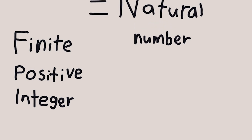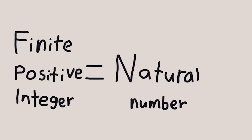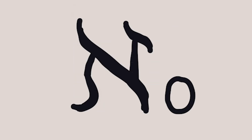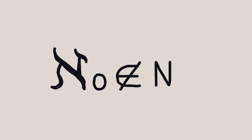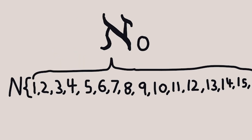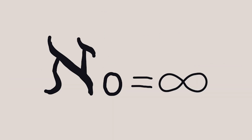Mathematicians call these natural numbers, and have a special name for the set of all natural numbers: N. They also have a special name for the size of this set — aleph null. Aleph null can't be any finite positive integer, because if it was, we could just add 1 and then have another number that needs to be in the set. So aleph null must be infinite — our first, smallest infinity.